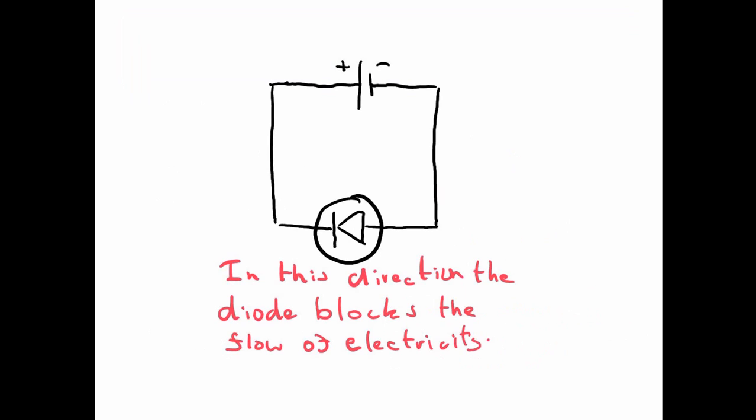In the opposite direction, though, if the conventional current, if you look at our diagram, is trying to go around from positive to negative, so it's trying to go anti-clockwise in this case, if you look at the symbol of the diode, it kind of hits something that looks a bit like a wall. And the diode in this direction, if the current is trying to flow in this direction, the diode is going to completely block the flow of electricity.